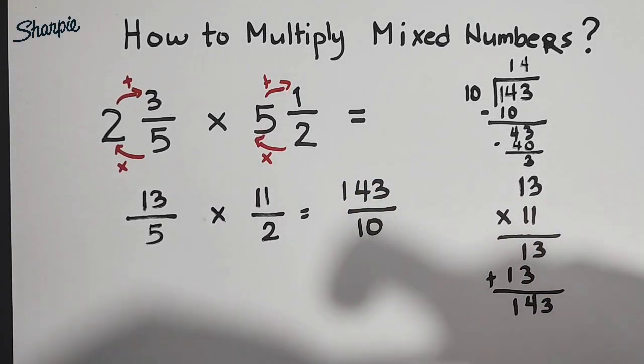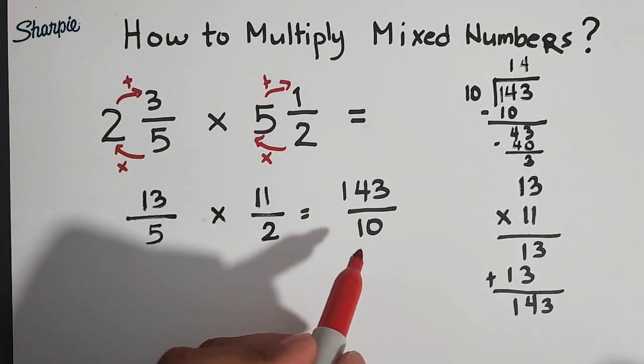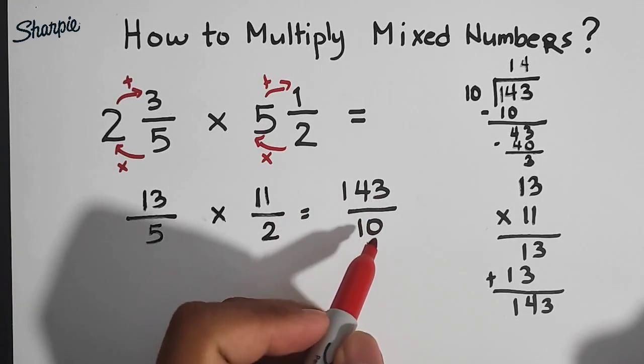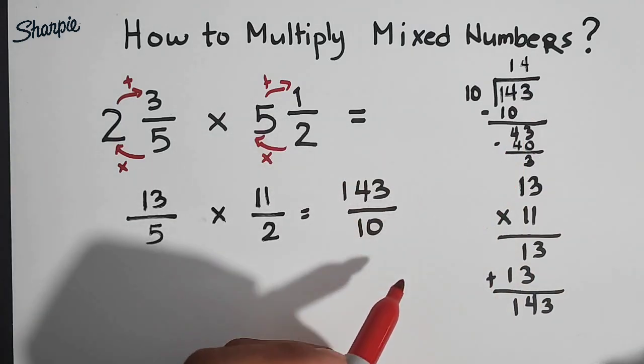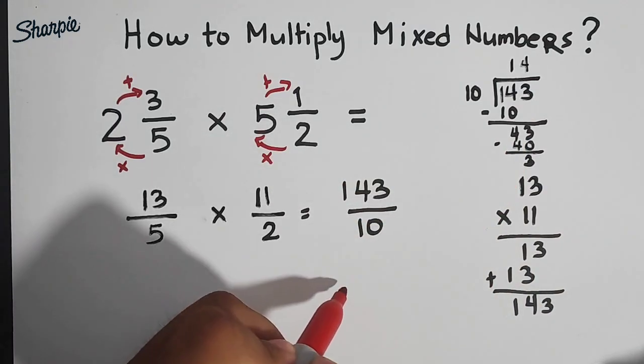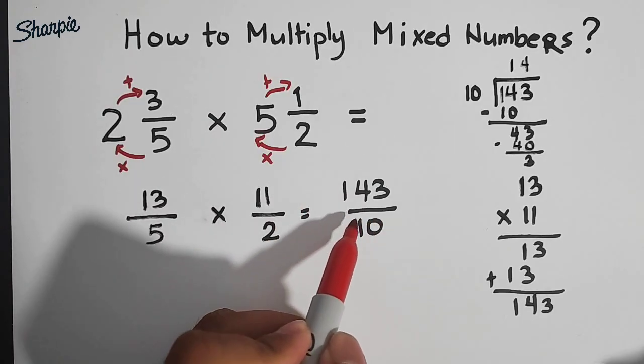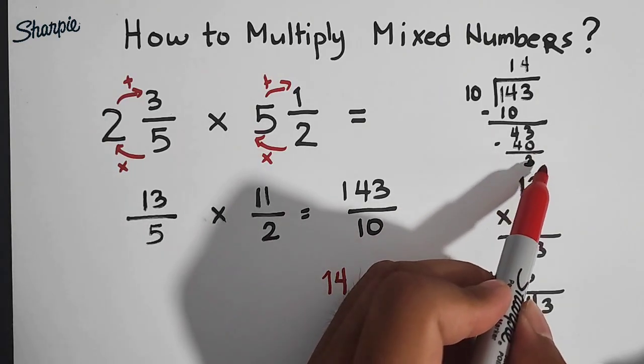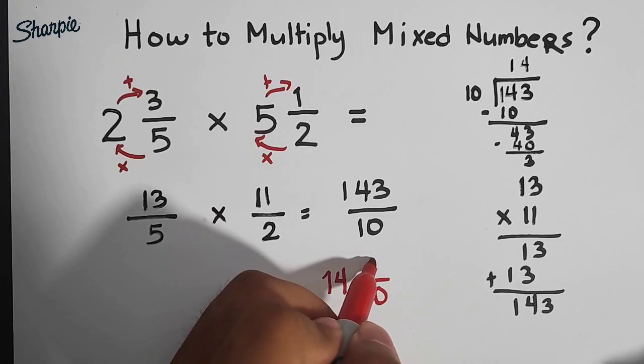So as you can see, based on this long division, what is the equivalent mixed number of this improper fraction, 143 over 10? This is your quotient. Your quotient, 14, will serve as the new whole number. So this is 14. Then copy your original denominator, or your divisor here, which is 10. And for the numerator, let us use the remainder, which is 3.